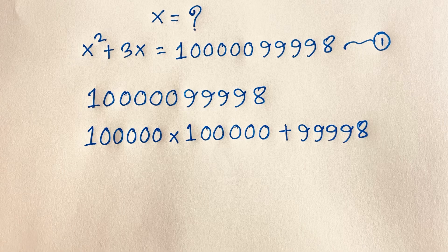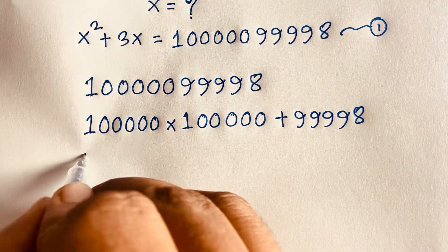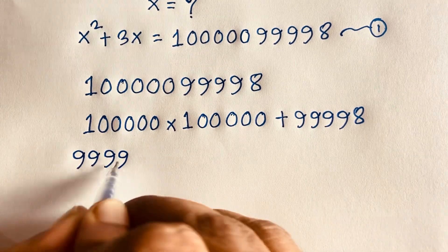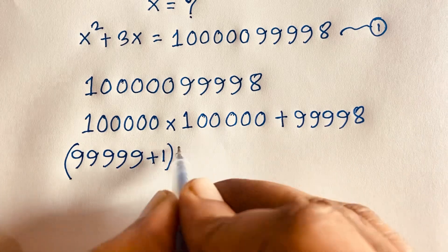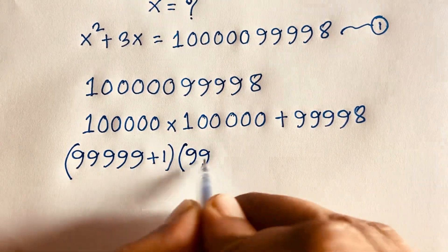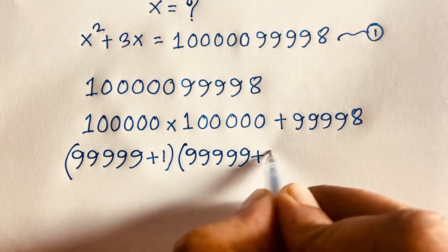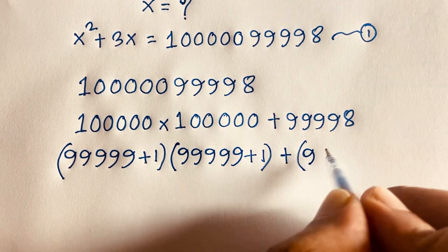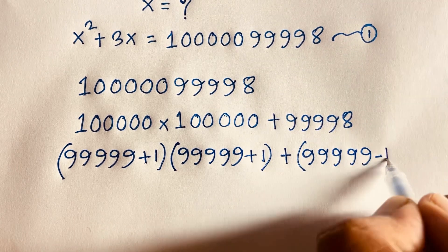Then I can see this big number will be 99,999 plus 1, and this number is also 99,999 plus 1, and this number is also 99,999 minus 1.